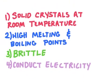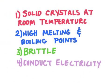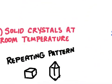Here are the four properties that we are going to look at. First of all, ionic compounds are solids at room temperature. They have a high melting and boiling point. They're brittle. And then they're also going to conduct electricity. So let's start with that first one, that they're solid at room temperature.